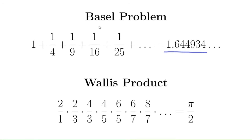Basel, by the way, is the name of a city in Switzerland where many mathematicians at the time were based, including Euler himself. Well Euler showed what this number is. It turns out that it's pi squared over 6, amazingly.